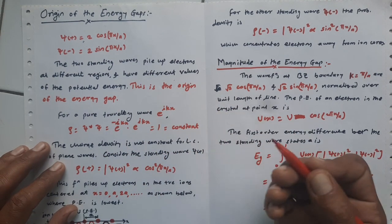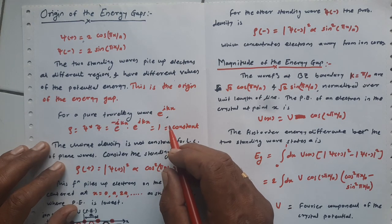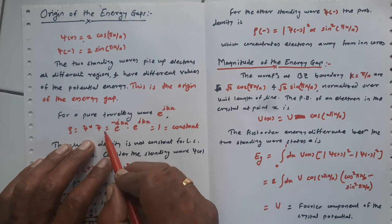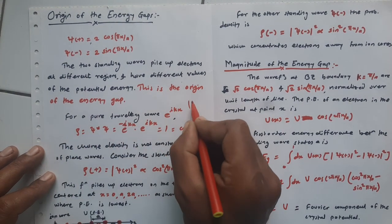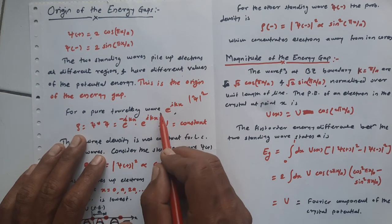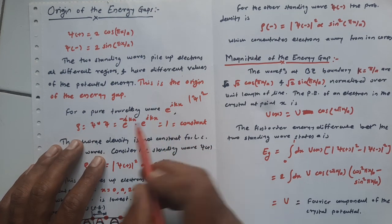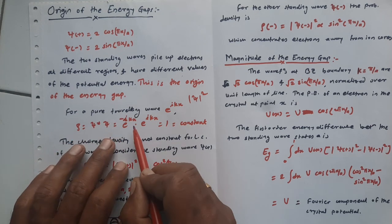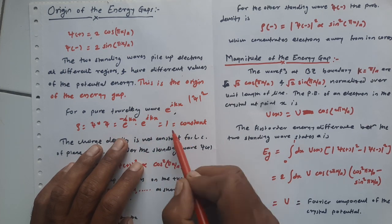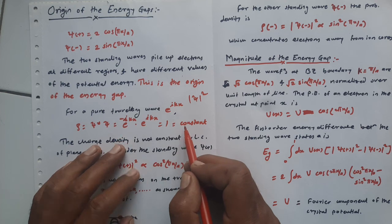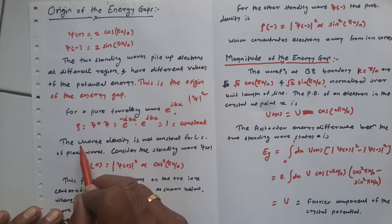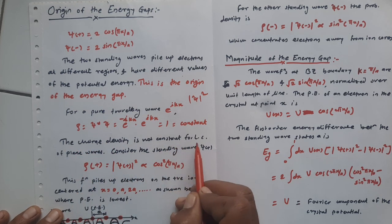The probability density gives us the occurrence of the particle or electron within a given region. The probability density is given by ψ*ψ, which can also be written as |ψ|². For a pure traveling wave e^(ikx), the probability density ψ*ψ equals e^(-ikx) times e^(ikx) equals one, which is a constant value.